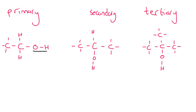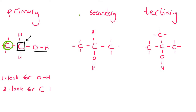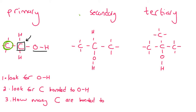What you do is you find the OH, then you look at the carbon that it is bonded to. Now, looking at that carbon, how many other carbons are touching it? Let me write down these steps: Step one, look for the OH. Step two, look for the carbon bonded to the OH. Step three, how many carbons are bonded to that carbon? For the primary example, there's only one carbon bonded to it, so we call this primary.